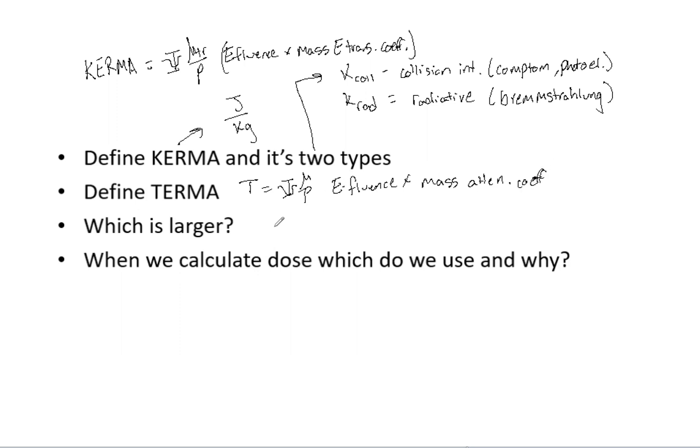So now which is larger? So Terma, I'm just going to put T, is greater than Kerma. And that is because Terma includes all the interactions, but Kerma only considers the kinetic energy transfer of charge particles. So that is why Terma is considered and it truly is larger.